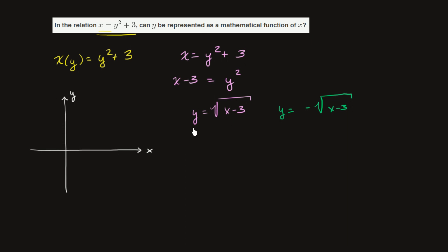And this right over here, y is the positive square root of x minus 3. That's going to look like this. So if this is x is equal to 3, it's going to look like this. That's y is equal to the positive square root of x minus 3.